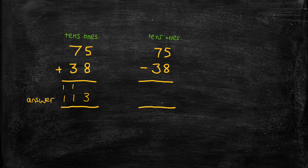So we'll start by trying to subtract 8 from 5 in the ones column, and we can't do that, because we only have 5 ones to subtract from, and we're trying to subtract 8 ones.